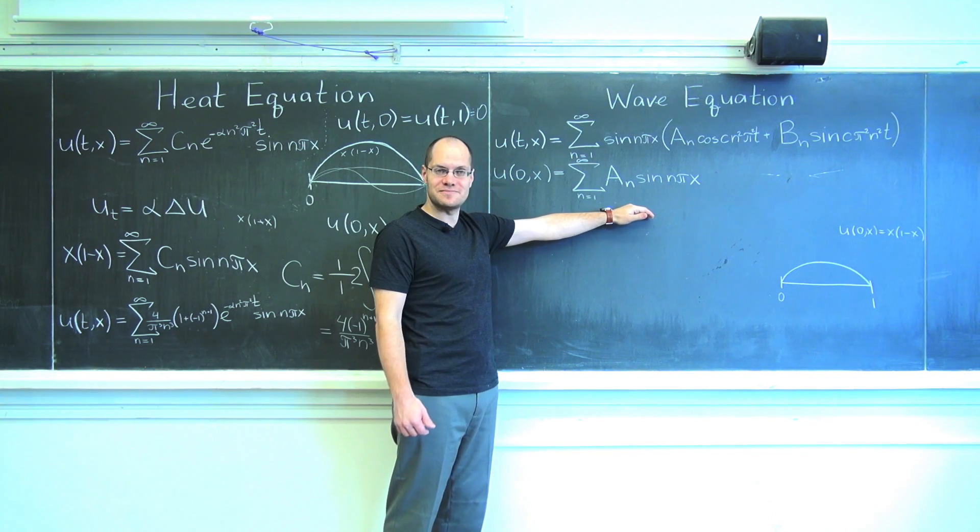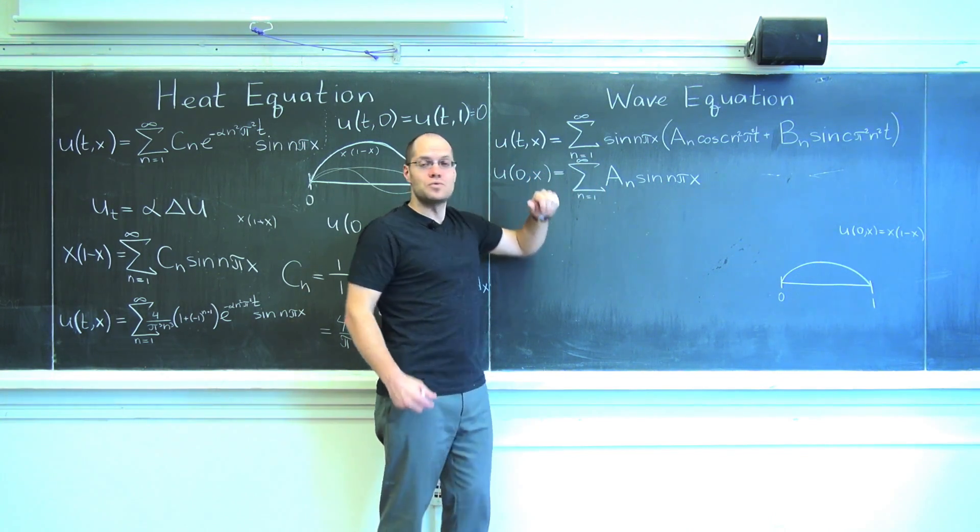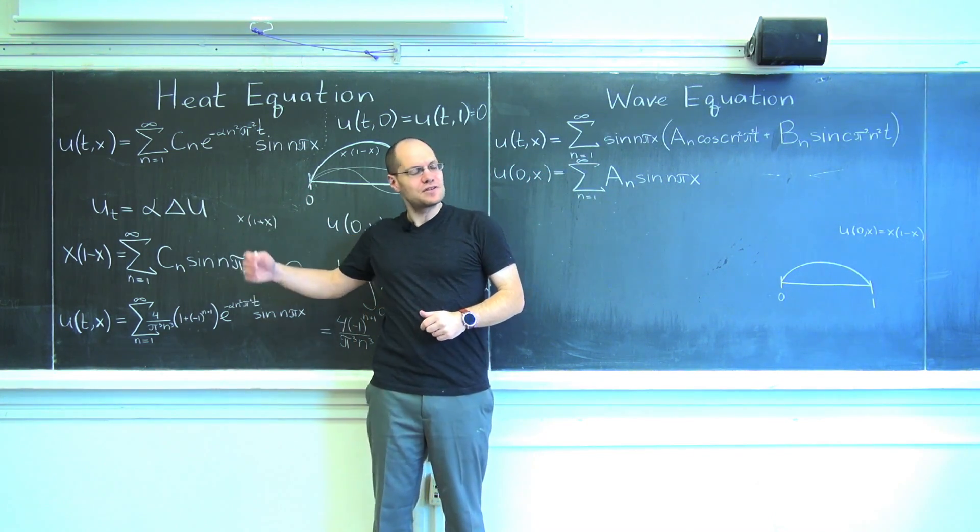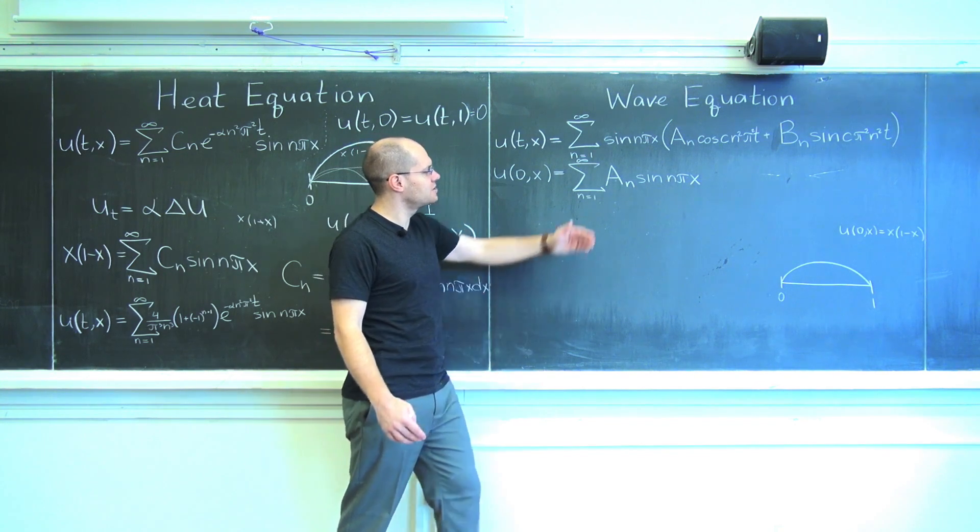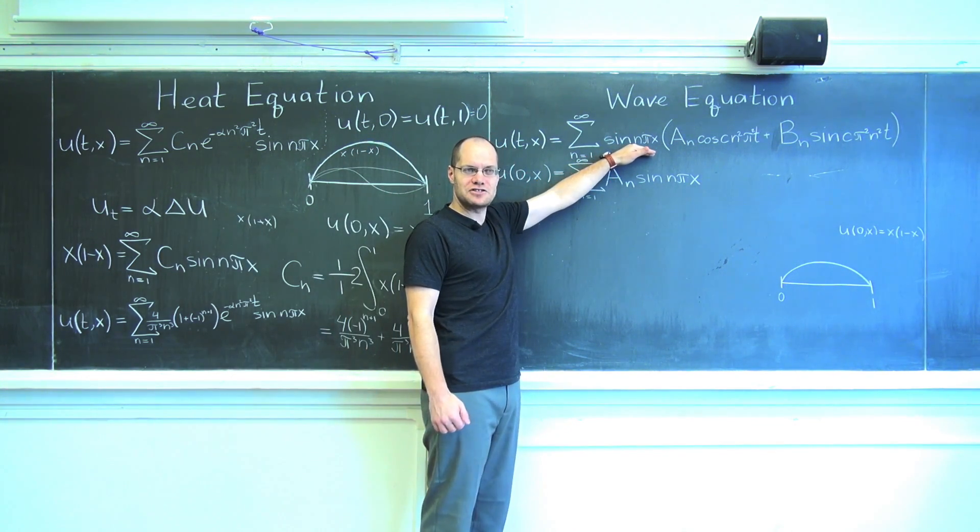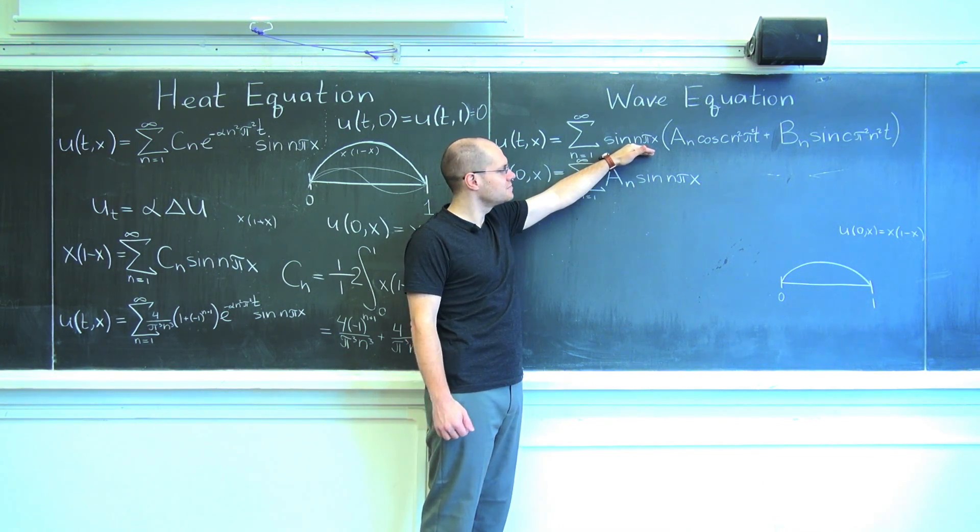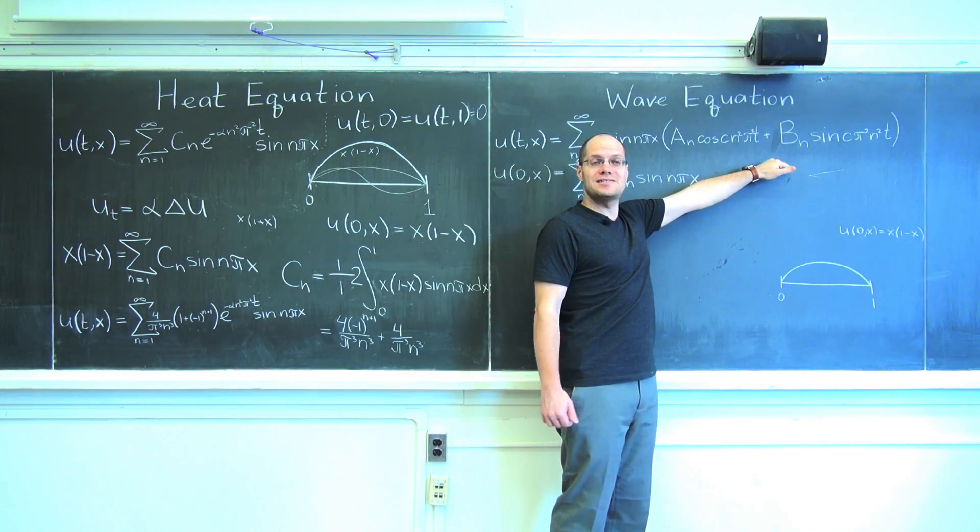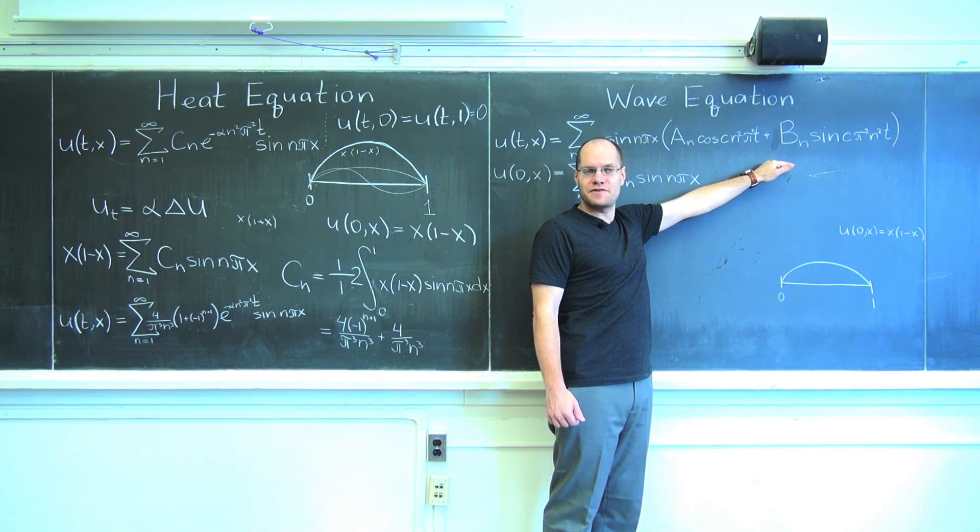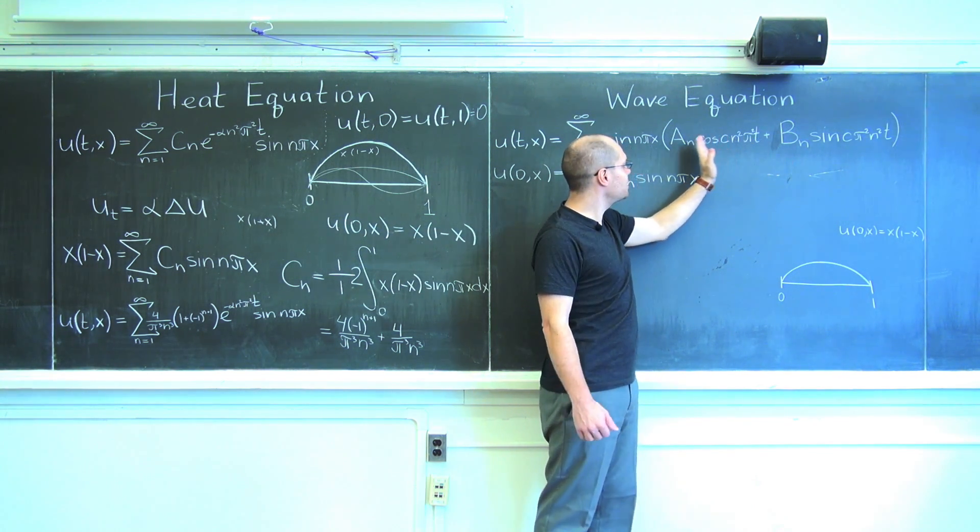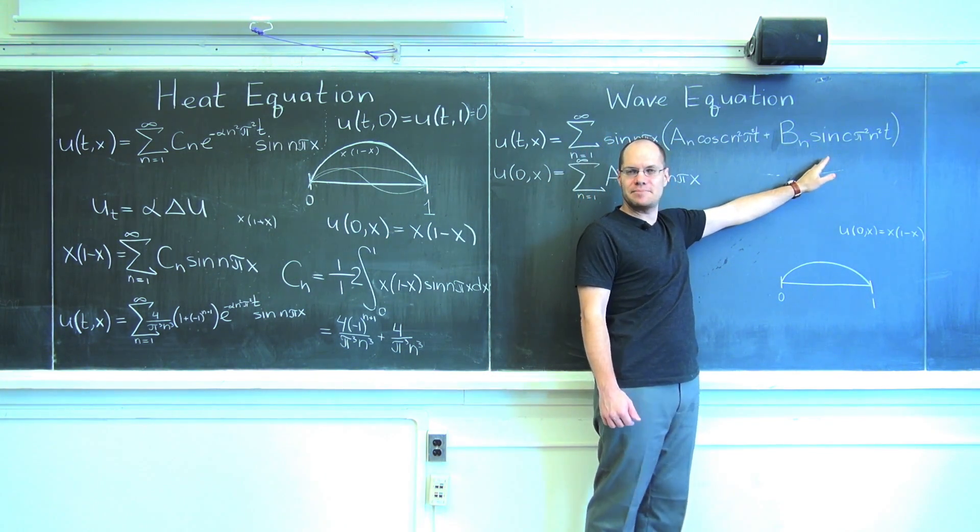So this is the equation. And so we repeated some of the same steps we did for the heat equation. Separation of variables, which gave us once again the eigenfunctions of the Laplace operator on the segment from zero to one. But we ended up with a second order ordinary differential equation in time. And so we had two constants, a sub n and b sub n.